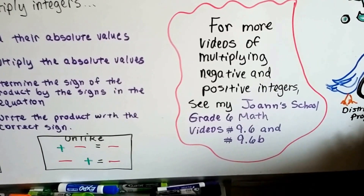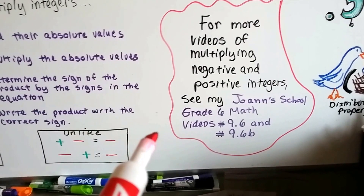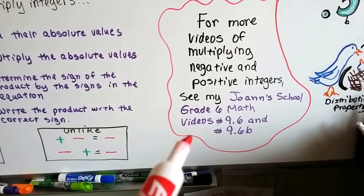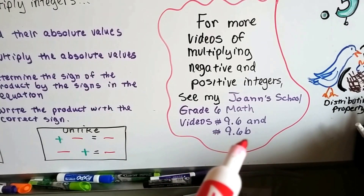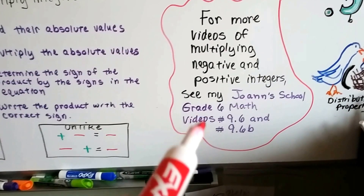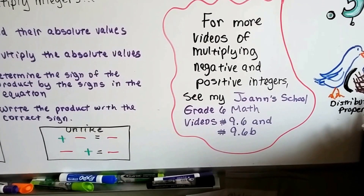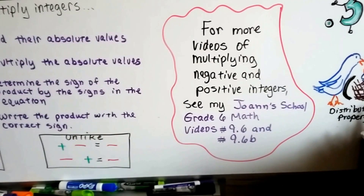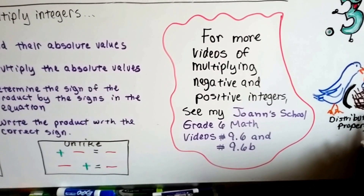Now, if you're still confused, as I said in the last video, you can watch more about multiplying negative and positive integers in the Joanne School grade six math videos number 9.6a, 9.6, and 9.6b. This was the end of sixth grade, and this is the beginning of seventh grade, so it might be a good refresher to catch up and get back into the swing of things from not doing math for a while.